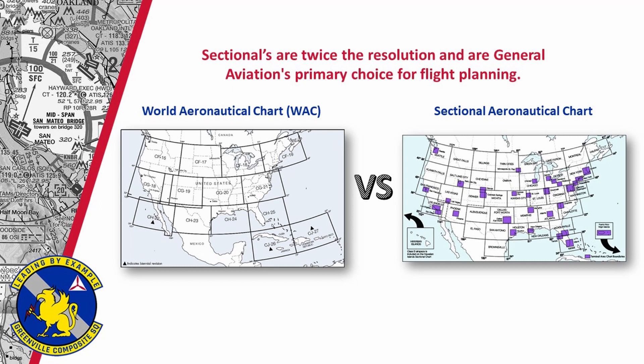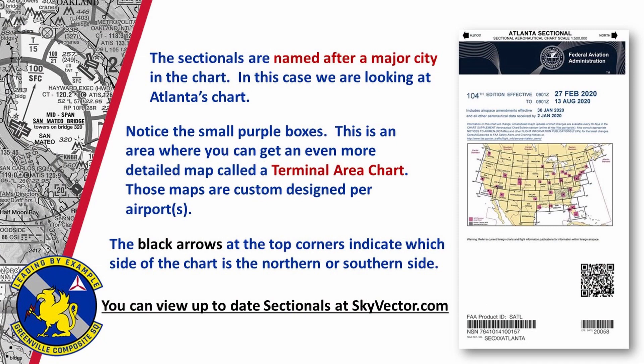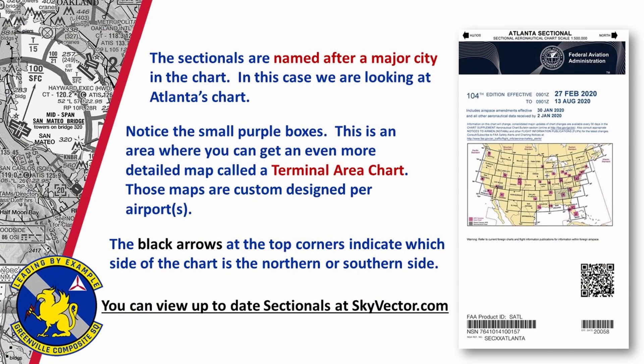Sectionals are named after the major city located in that chart. In this example, we are looking at an Atlanta sectional chart. The purple boxes on the map are the location of the terminal area charts. The black arrows at the very top of the map let you know which side of the map shows the northern or southern portions. I can't tell you how entertaining it is to watch both new and old pilots constantly flipping the maps over and over. With all the new glass flight planning in cockpits nowadays, we may not enjoy rustling all that paper much longer.